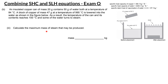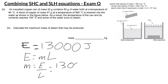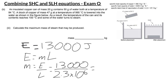The final part of the question is to calculate the maximum mass of steam that might be produced. From the previous part, the energy available is 13,000 joules. Since we're talking about a state change, the equation is E = mL. From the data, the latent heat of vaporization is 2.3 × 10⁶. Rearranging to m = E/L gives 13,000 ÷ 2.3 × 10⁶, which gives an answer of 0.0057 kilograms.